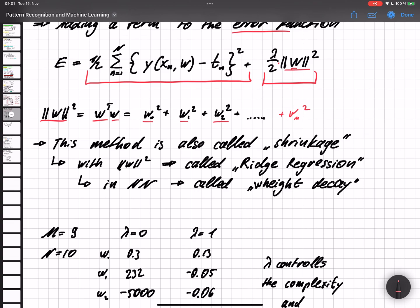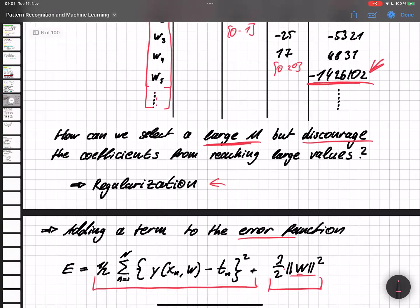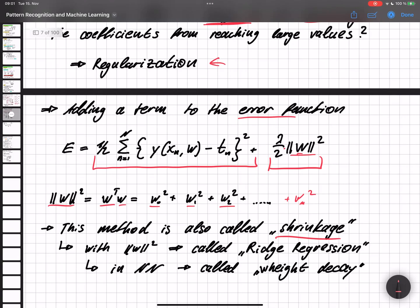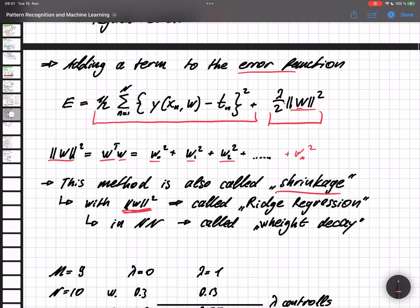And this method is also called shrinkage because we shrink these values so that they do not become too large. And if we use this specific instance of w to the power of 2, so the length of the vector, it's called ridge regression. And in a neural network that does the approximation of this polynomial, we call it weight decay.